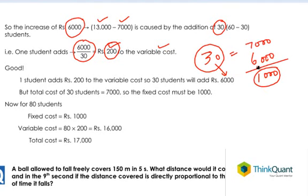So this is our fixed cost and this does not depend upon the number of students. So in effect, our equation of the total cost becomes our fixed cost plus 200 into the number of students. Using this we can find the total cost for 80 students.